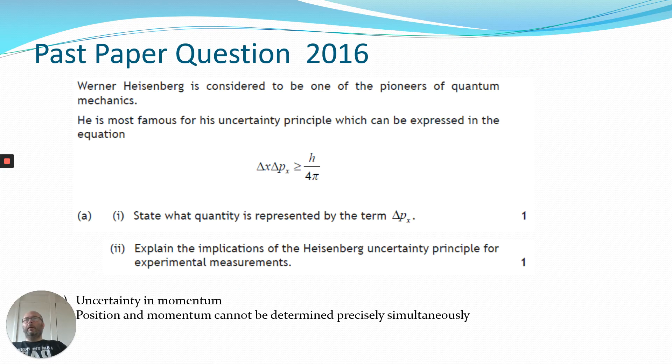So let's have a look at an example. Fairly simple one. Looks very past paperish. So we've got, right in the middle of the page there, delta X delta P is greater or equal to H over 4 pi. So part AI asks, what is the quantity represented by the term delta P? Well, that's our uncertainty in momentum. One mark. And explain the implications of the Heisenberg uncertainty principle for experimental measures. One mark, again, is something you can learn by rote and spit out. So position and momentum cannot be determined precisely simultaneously.